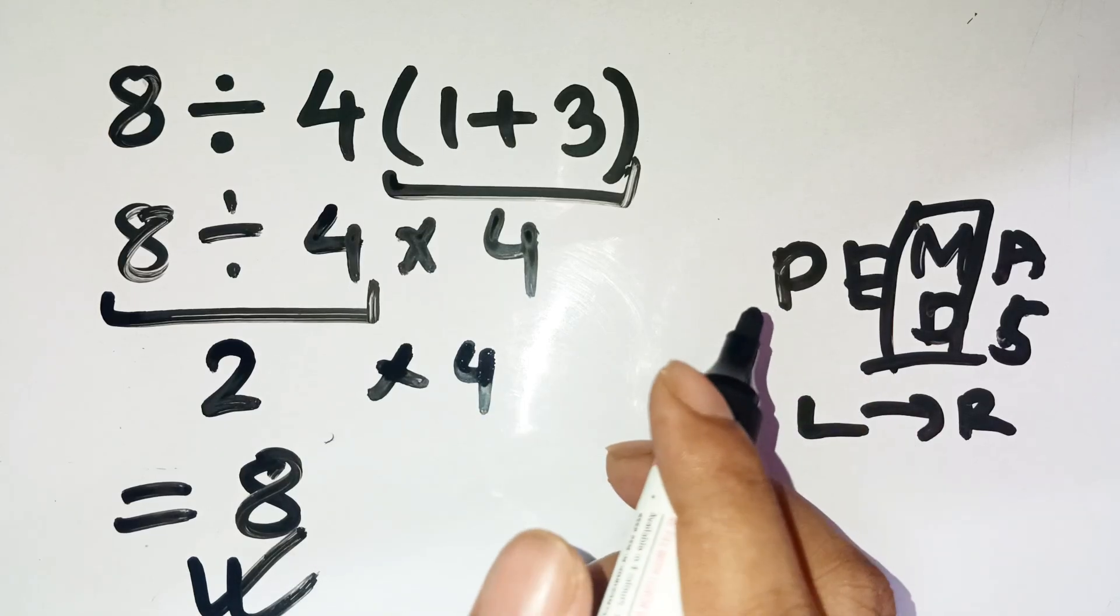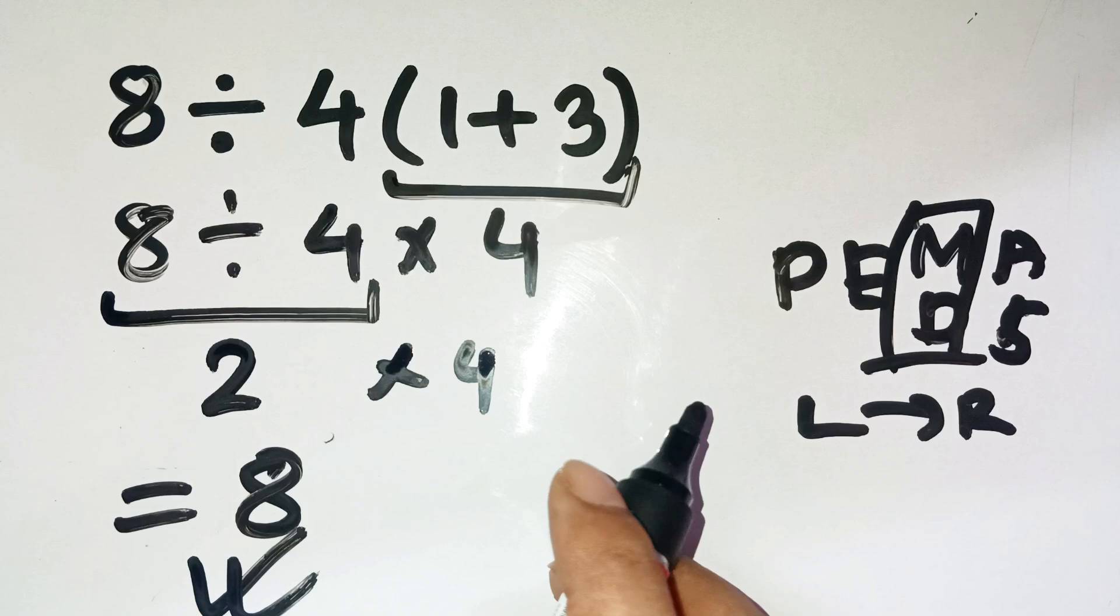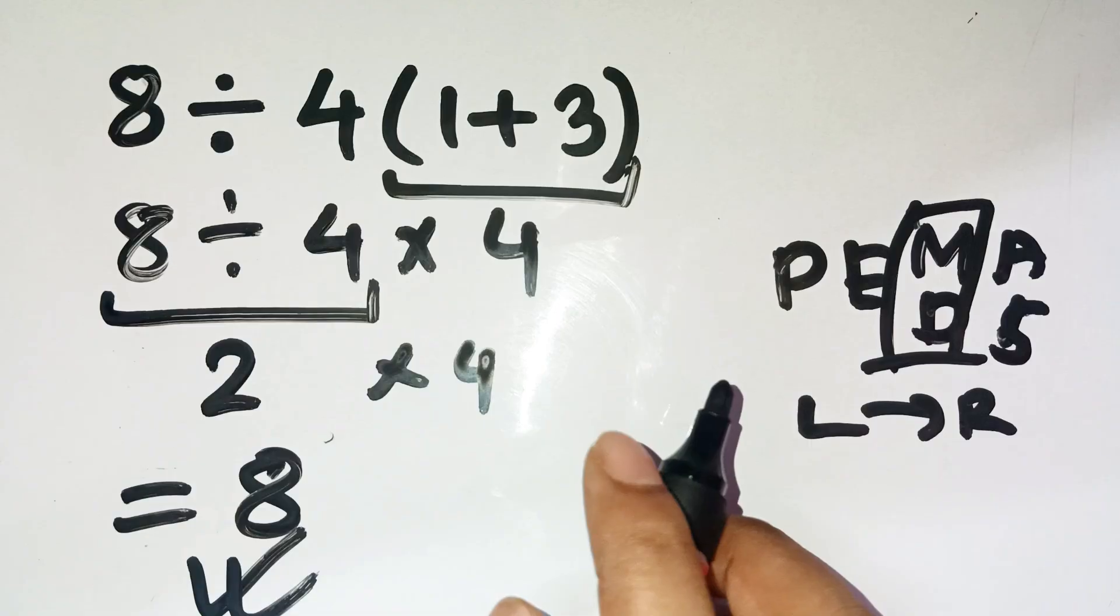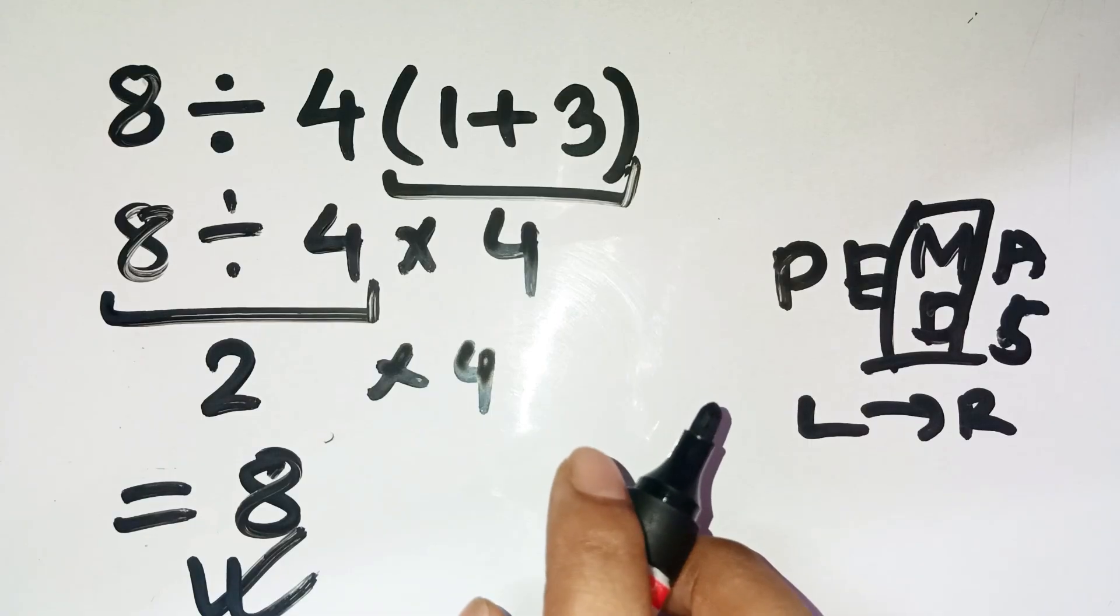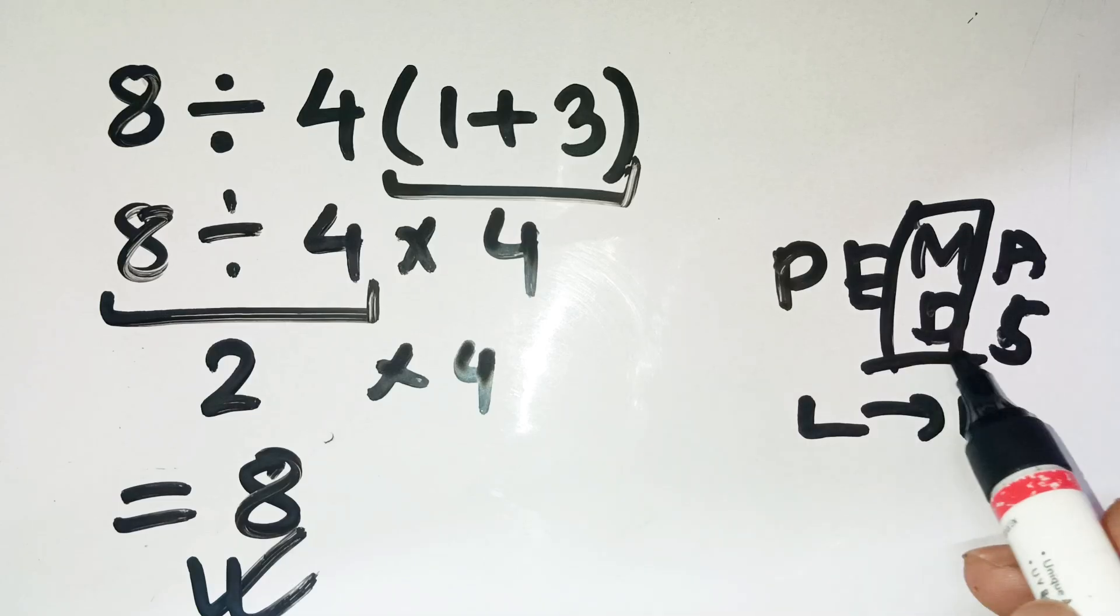This is why so many people stumble. Our eyes are trained to group 4 times 1 plus 3 as one single block, almost like it's glued together. So our brain reads it as 4 times that whole part before dividing. But math doesn't see it that way. It only follows order and position. Division comes first here because it's on the left.